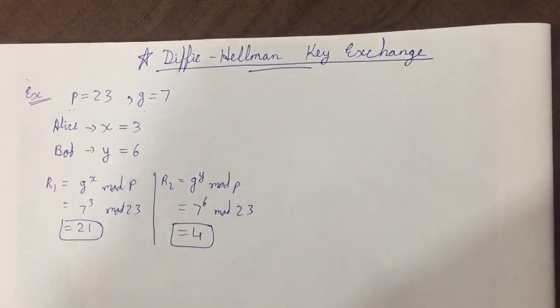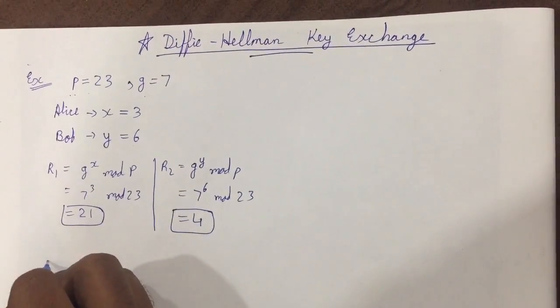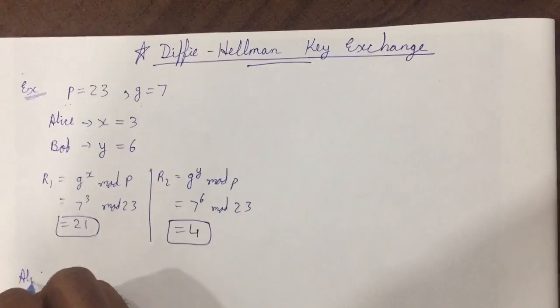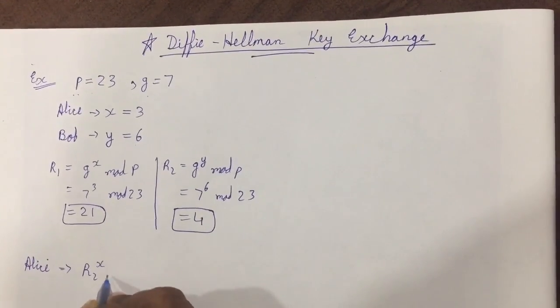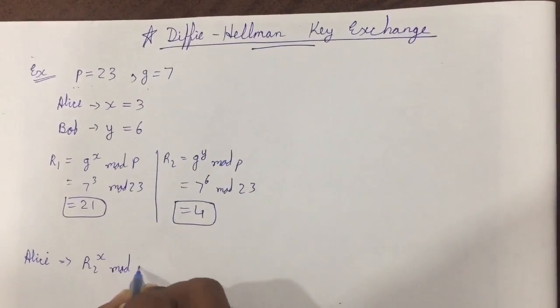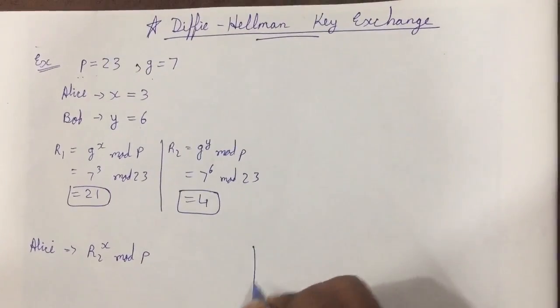If they match, then and only then they would be able to exchange their keys. For that, the formula we have for Alice is R2 raise to x mod p, and for Bob the formula is R1 raise to y mod p.